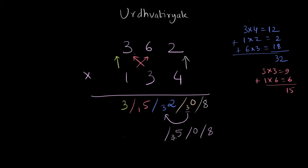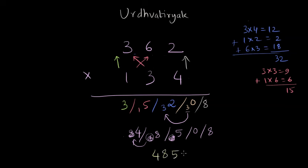So we write zero and push carry three to 32, making it 35. We write five and a small three. Then we push that three to 15, making it 18. We write eight and a small one, erasing the old carry. Finally, pushing the one to three gives four. The result is 48,508, which is the product of 362 and 134.